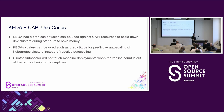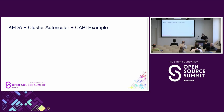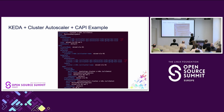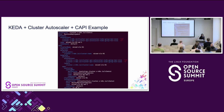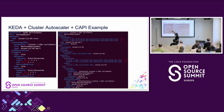Here's how KEDA, Cluster Autoscaler, and CAPI work together practically: on the machine deployment, set the Cluster Autoscaler annotations with min size 3 and max size 10. Then create a KEDA ScaledObject using the cron trigger to define scale-down hours (off-hours) and scale-up hours, bringing it out of and back into range. Cluster Autoscaler then handles the in-range scaling. This is very easy to implement if you want Cluster Autoscaler benefits plus scheduled scaling.